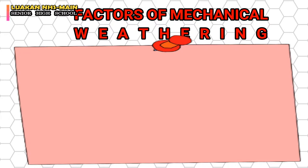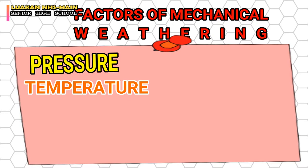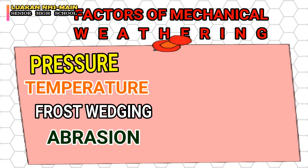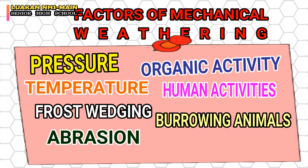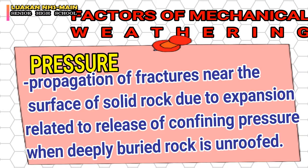When we talk about mechanical or physical weathering, there are many factors in the environment and in the world that influence how this happens. These factors are: pressure, temperature, frost wedging, abrasion, organic activities, human activities, and burrowing animals. The first factor under mechanical weathering is pressure. Pressure is the propagation of fractures near the surface of solid rock due to expansion-related release of confining pressure when deeply buried rock is unroofed.